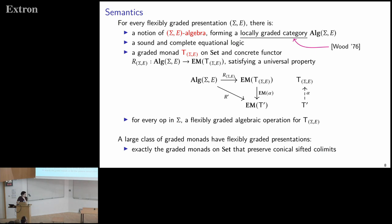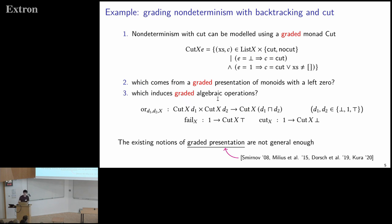Question: Is there any connection between this and some notion of subtyping, sub-effecting, or sub-grading? The restriction in normal presentations requires grades to match up — wondering if subtyping coercions correspond to flexible grading. Answer: By sub-grading you can always make D1 and D2 the same by increasing them, but then the problem is you don't get bottom — you forget that one computation will cut, so you don't learn the final result will cut. So you can do something there, but it doesn't help.